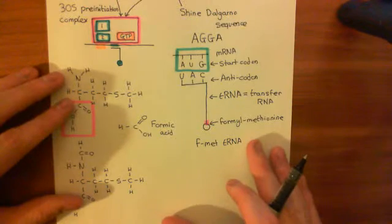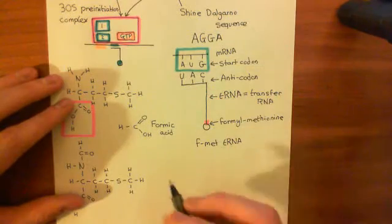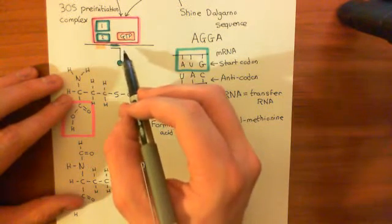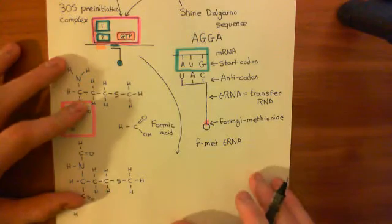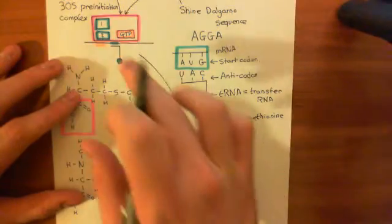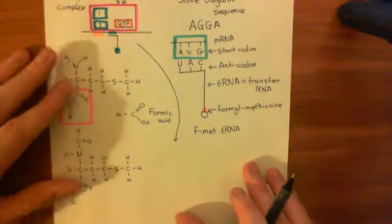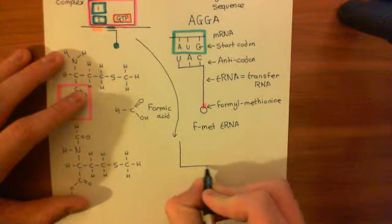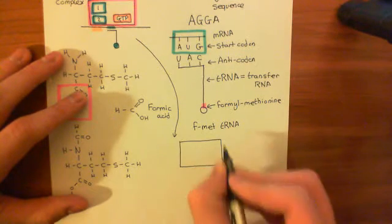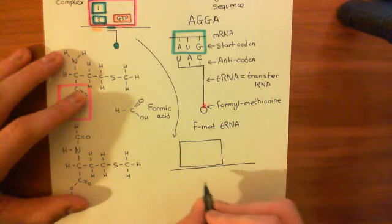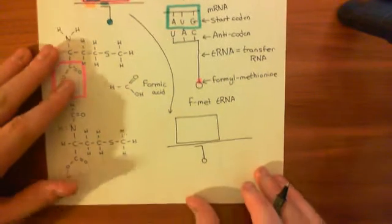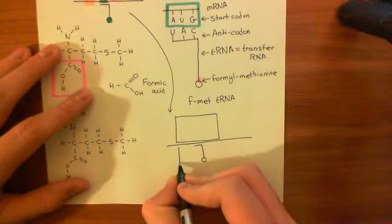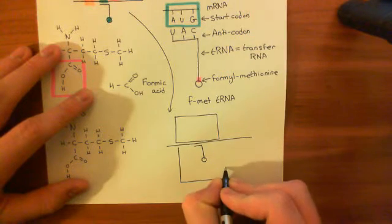What now happens is another subunit is going to come along and bind here. The next thing that's going to happen is you're going to bring in the 50S ribosomal subunit, which is bigger than the 30S ribosomal subunit. When you add it on, initiation factor 1 and 2 are going to cleave off and the GTP is going to be hydrolyzed to GDP and inorganic phosphate. Here's our formylmethionine-tRNA with the formylmethionine at the end, and the 50S ribosomal subunit is going to come and bind.